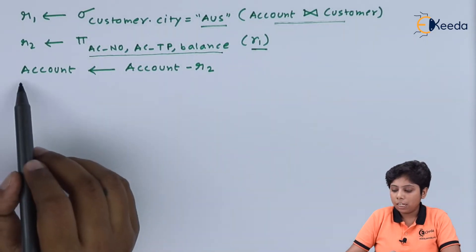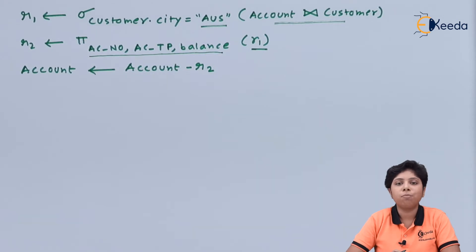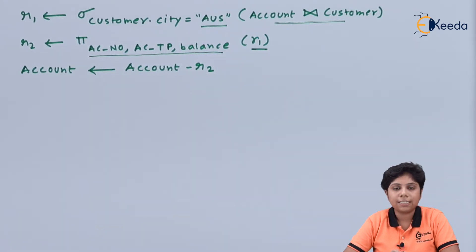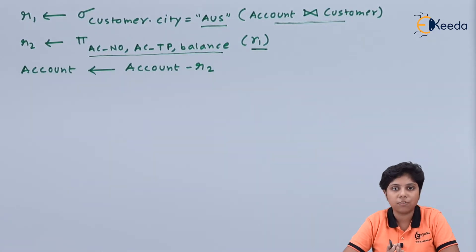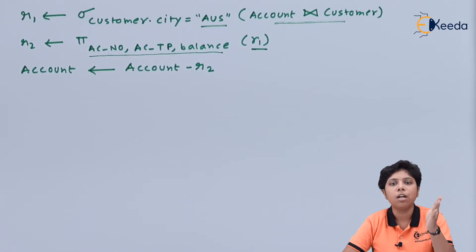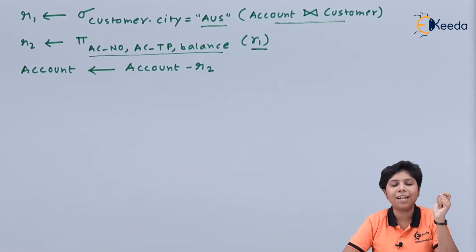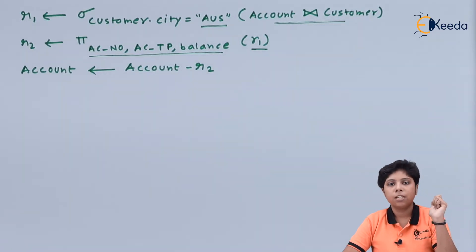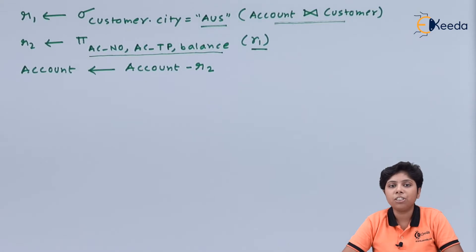Now account equals account minus r2 — that is, the account is updated by subtracting or deleting all the records of the customers and their account numbers from the account relation joined with the customer relation. So now we will have the information for all customers other than those residing in Australia. That is all for the delete operation; next we will move to the insertion operation.